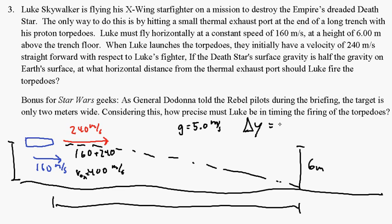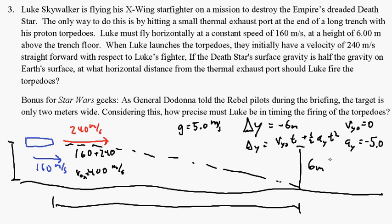First we're going to figure out how long it takes. So delta Y is negative six meters, and delta Y equals V_Y0 times T plus one-half times acceleration in the Y direction times T squared. We know V_Y0 is 0, and acceleration in the Y direction is negative 5.0. So delta Y is negative 6 equals one-half times negative 5 times T squared, which means T squared equals 2.4. And I can't take the square root of 2.4 in my head — even I am not that awesome.